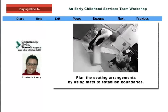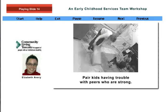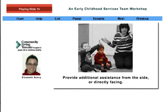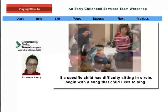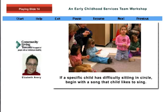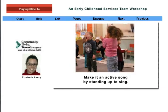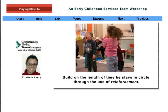Plan seating arrangements by using mats to establish boundaries. Pair children who have trouble following actions of songs with peers who are strong in this area. On occasion, a child will need additional assistance such as sitting beside the teacher who is assisting or sitting directly across from you. If a specific child has difficulty sitting in a circle, begin with a song that child likes to sing. If he has difficulty staying in a circle even for one or two songs, begin with the child's favorite song and make it an active song by standing up to sing. If the child continues to have difficulty with staying, let him leave the circle, but try to build on the length of time he stays through the use of reinforcements. You can learn more by watching the reinforcement workshop, the companion to giving instructions.